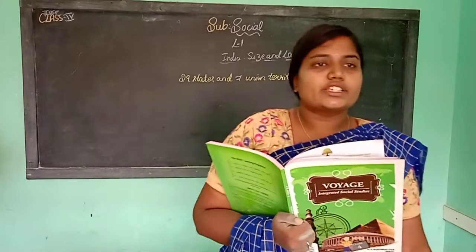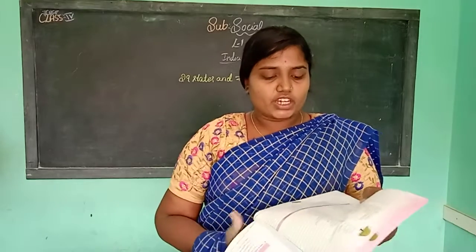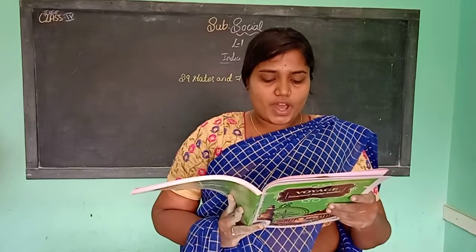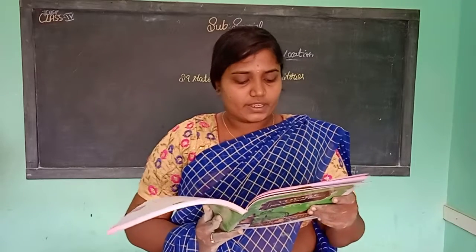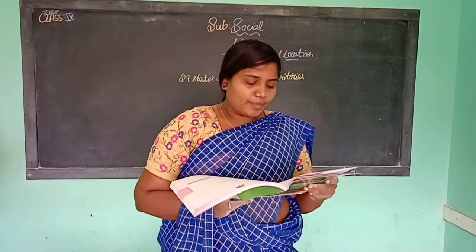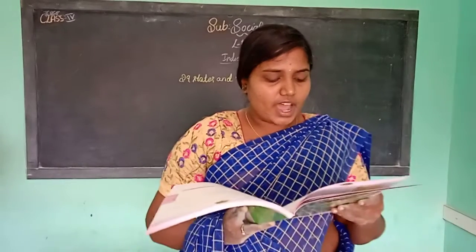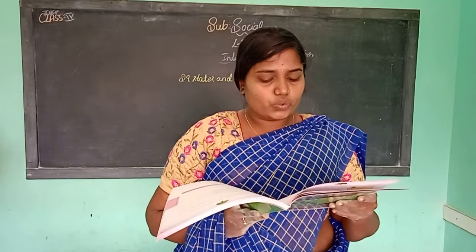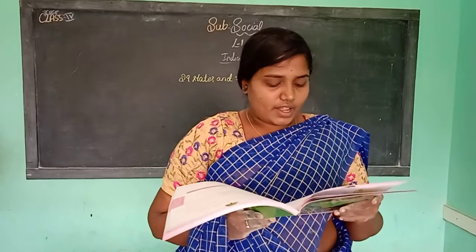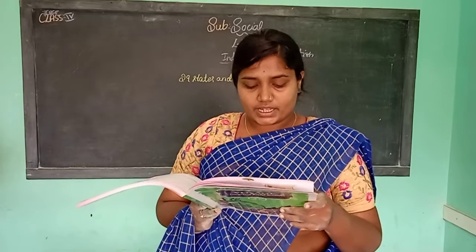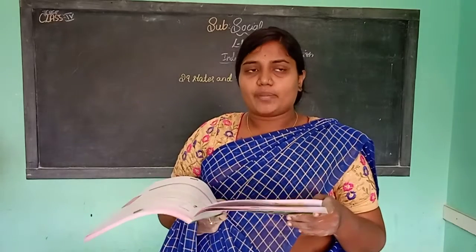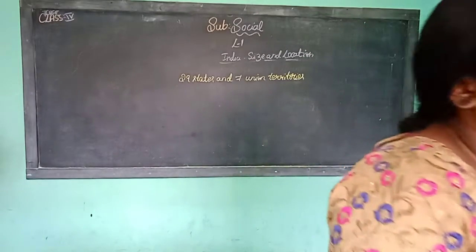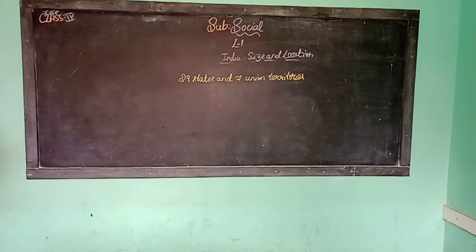There are 29 states, and for the 7 Union Territories: Andaman and Nicobar Islands — capital is Port Blair. Chandigarh — capital is Chandigarh. Dadra and Nagar Haveli — capital is Silvassa. Daman and Diu — capital is Daman. Lakshadweep — capital is Kavaratti. National Capital Territory of Delhi — capital is Delhi. Puducherry — capital is Puducherry.